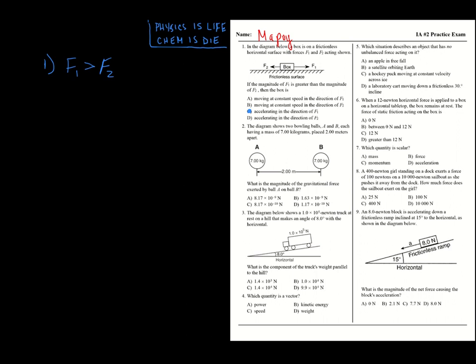If the forces were the same on both sides, we'd be looking at equilibrium — constant speed. Number two: we have two masses, both seven kilograms each, separated by a distance of two meters. We're figuring out the magnitude of the gravitational force exerted between them. Because of Newton's third law, the force is the same either way, but we need to calculate the magnitude.